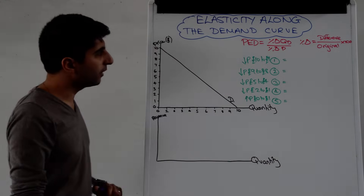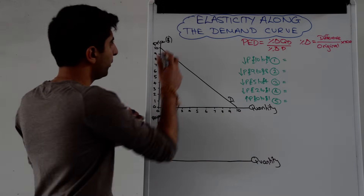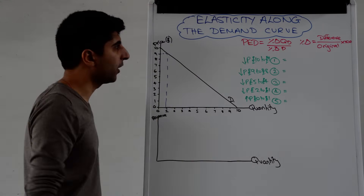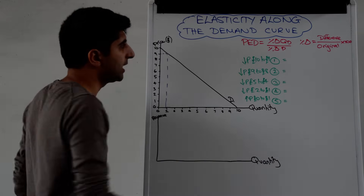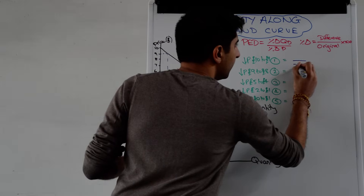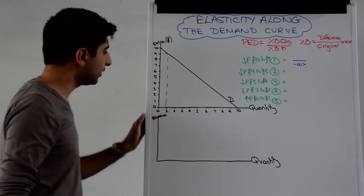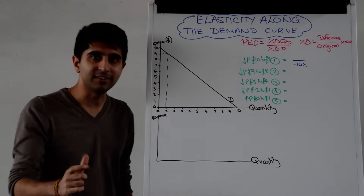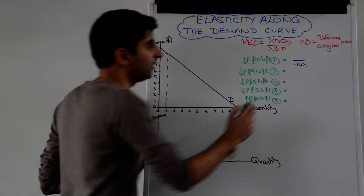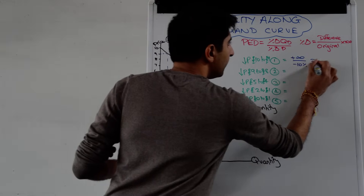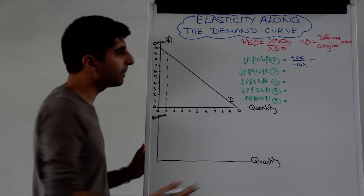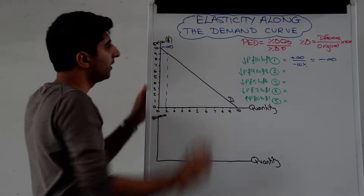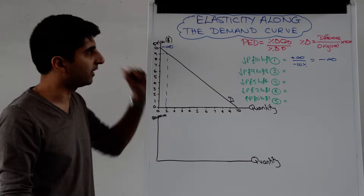Let's take the first calculation: a price drop from £10 to £9. If we go from £10 to £9, then quantity is increasing from 0 to 1. The percentage change in price is a 10% reduction. The percentage increase in quantity demanded is infinite — the difference is 1 divided by the original, which is 0, and anything divided by 0 is infinity. So the top part of the demand curve represents perfectly elastic demand.